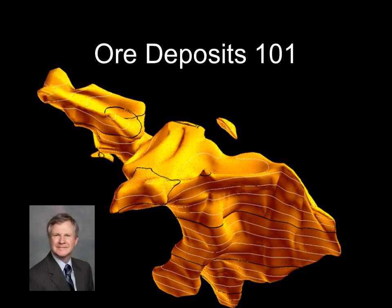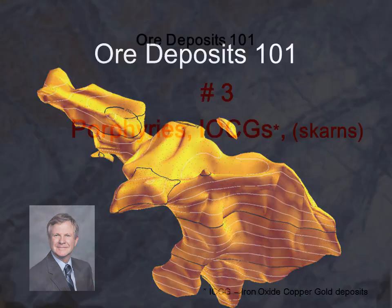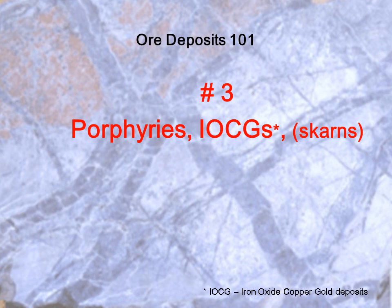My name is Andrew Jackson. I'm a geologist with Global Resource Investments, responsible for technical evaluations of mineral companies and their properties. I've put together this Ore Deposits 101 series of talks to help non-technical people understand ore deposits — how they form, how they are explored for, how they are evaluated and mined, and how the metals and minerals are extracted from the ore. This is the third talk, focusing on porphyries and iron oxide copper gold deposits, or IOCGs.